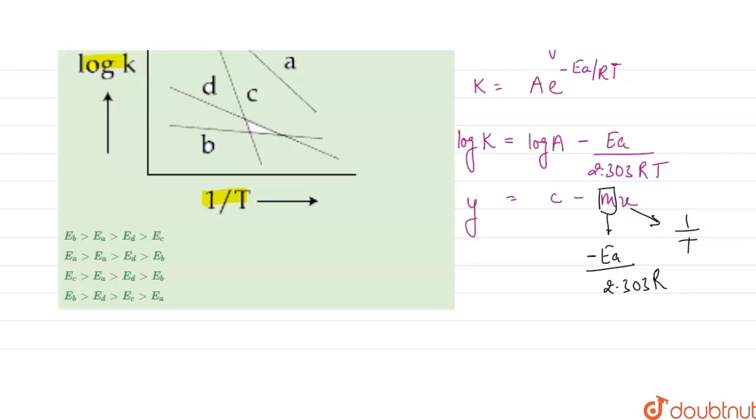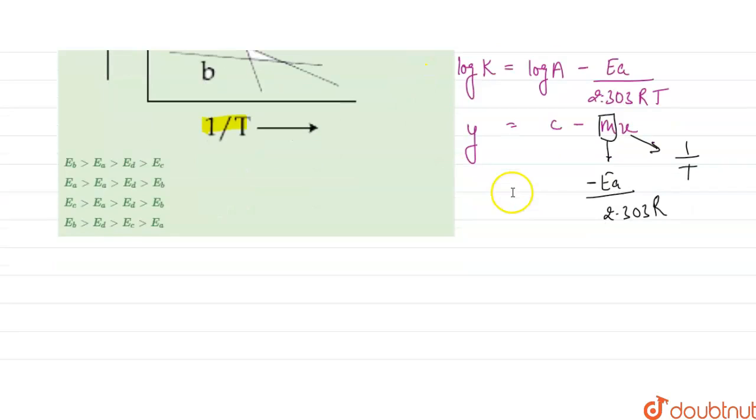So the slope of this equation will be minus Ea upon 2.303 R. Now, if lower the slope, higher is the activation energy. If higher is the slope, lower will be the activation energy.